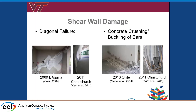Typical failure modes of reinforced concrete shear walls are diagonal failures, flexural failures, and lap-splice bar failures. You can see in the pictures on the left these diagonal tensile and diagonal compression shear failures. On the right side, also very typical, are bar buckling, concrete crushing, and shear sliding of a shear wall — we don't want that to happen. Out-of-plane wall buckling could also be an issue.